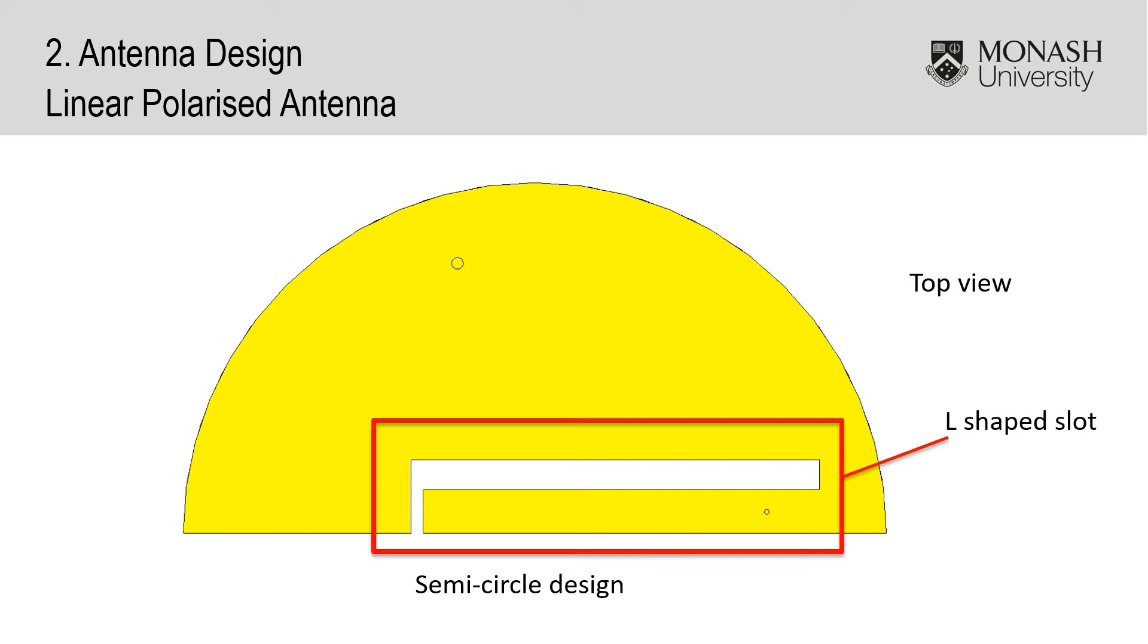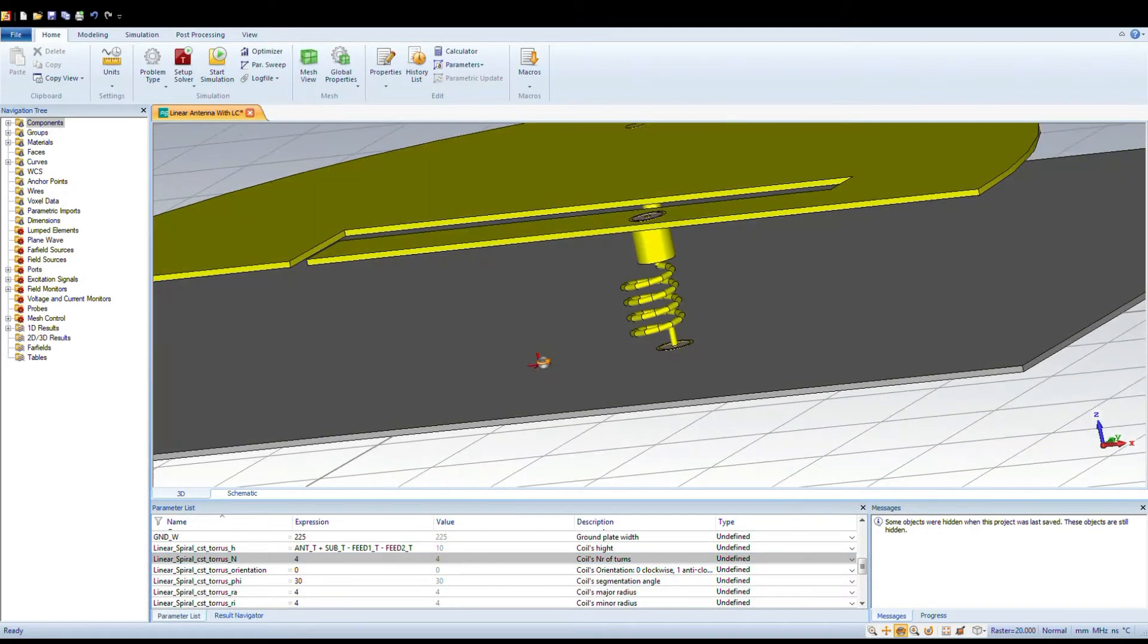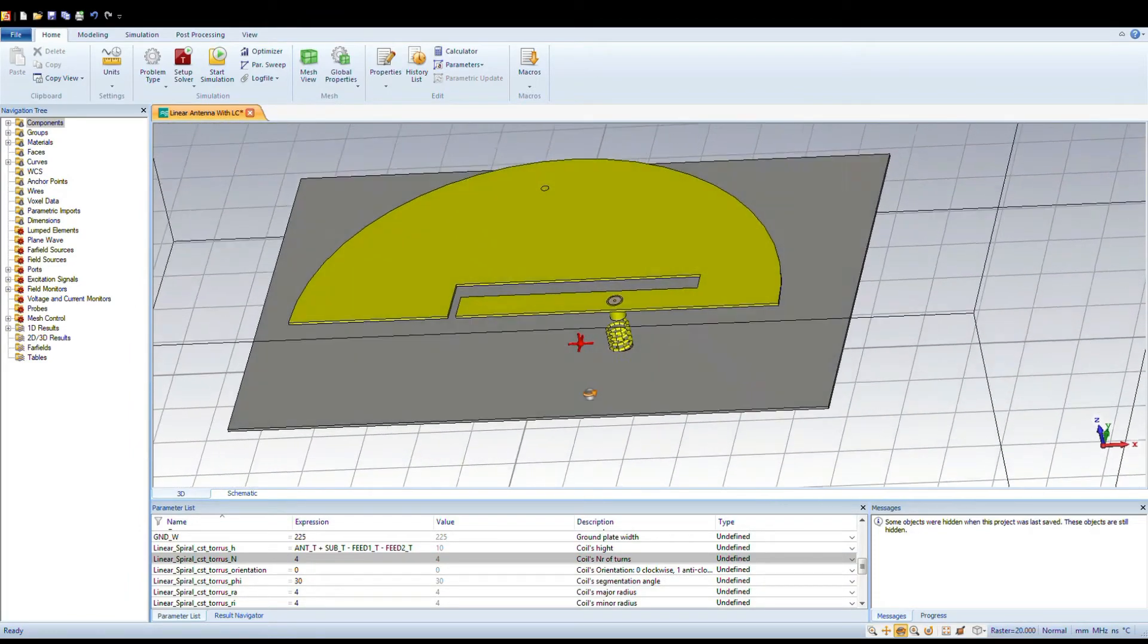An L-shaped slot was added to further increase the bandwidth by creating another resonant component. The initial CST simulations had a 40 MHz bandwidth, however it did not cover the entire global RFID spectrum. A capacitor inductor feed was added to the design to introduce resonant components which, in turn, increases the bandwidth.